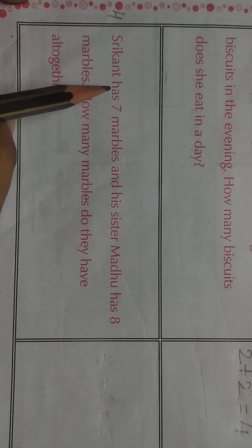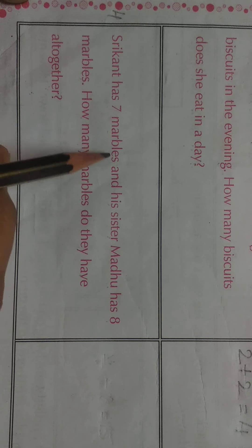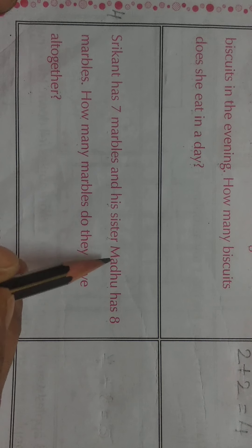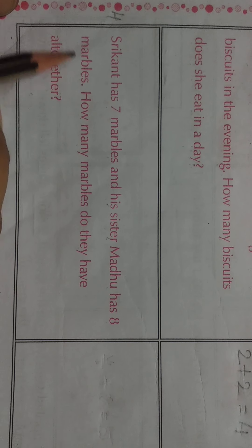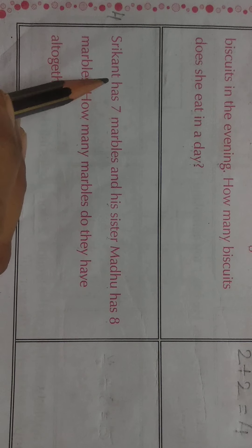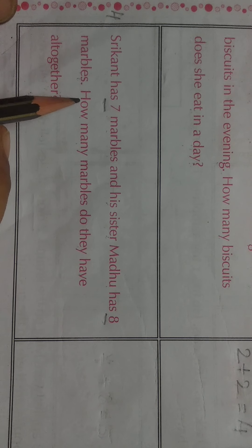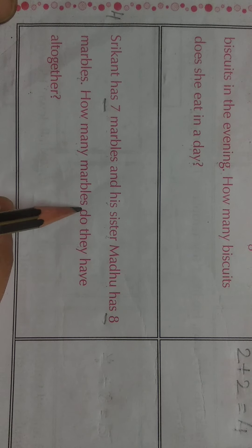Fourth sum. Shrikant has 7 marbles and his sister Madhu has 8 marbles. Marbles means you know na, gote kehte hai na? Shrikant ke paas 7 marbles hai and uska sister ke paas 8 marbles hai. So the question is, how many marbles do they have altogether? Altogether means kul milake, dono ke paas kitne marbles hai?